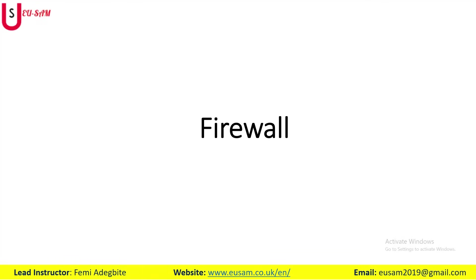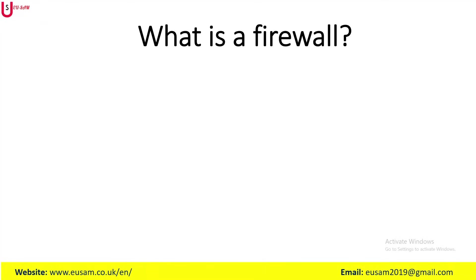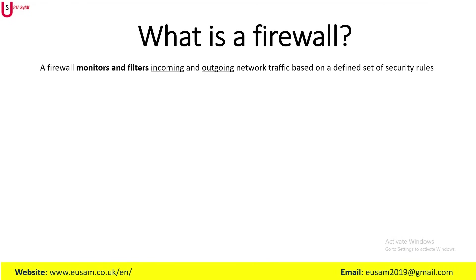I will be explaining what a firewall is and the different types of firewall that can be used within a business or an organization. A firewall acts as a barrier between a trusted internal network and an untrusted external network through the internet. The function of a firewall is to monitor and filter incoming and outgoing network traffic based on a defined set of security rules.